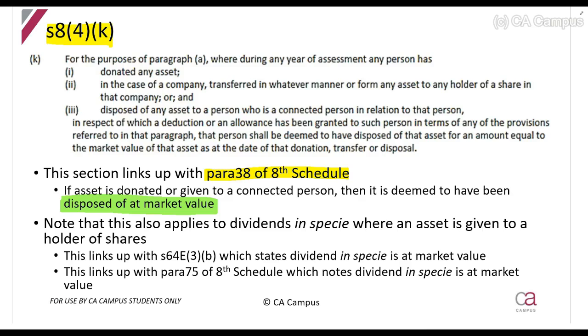It says the same thing: if you donate an asset, give it as a dividend in specie, or to a connected person, you treat it as if you sold it at market value.